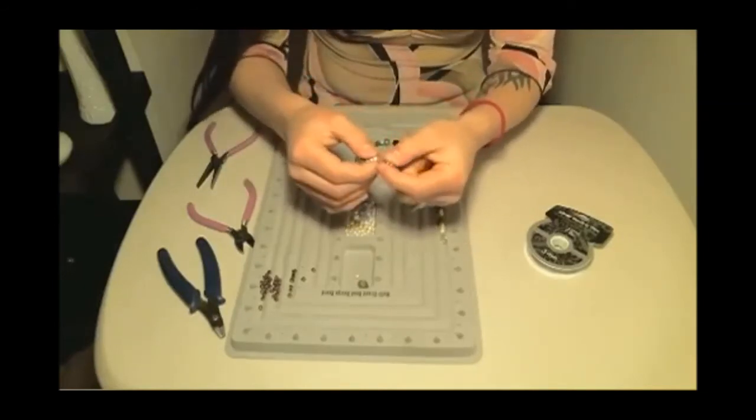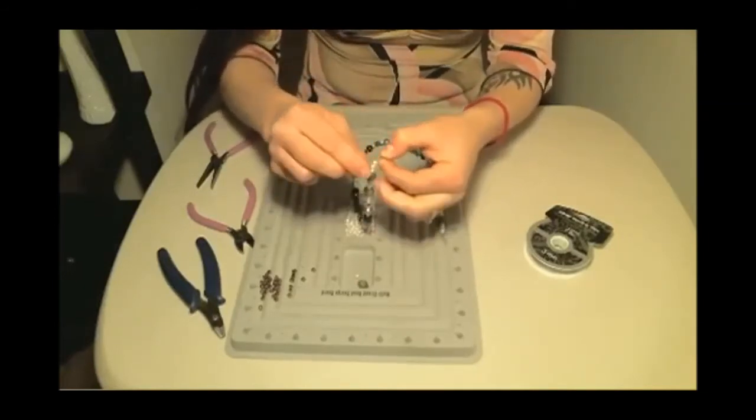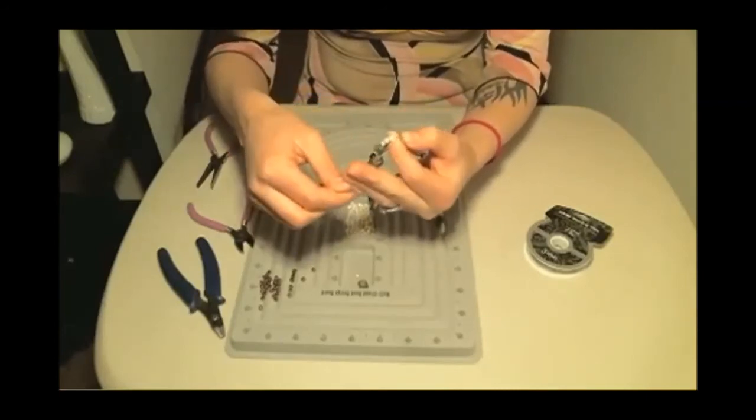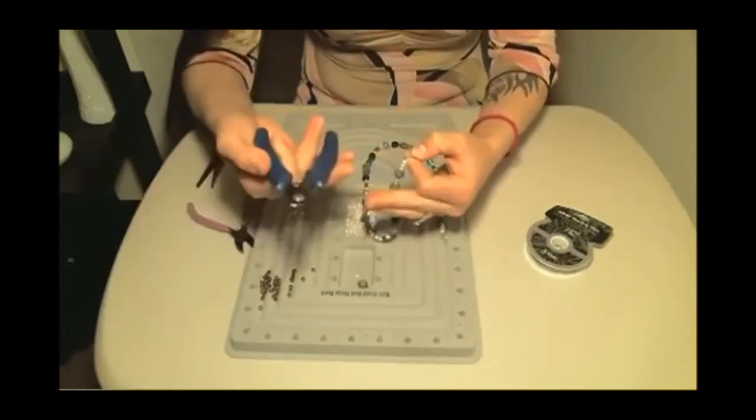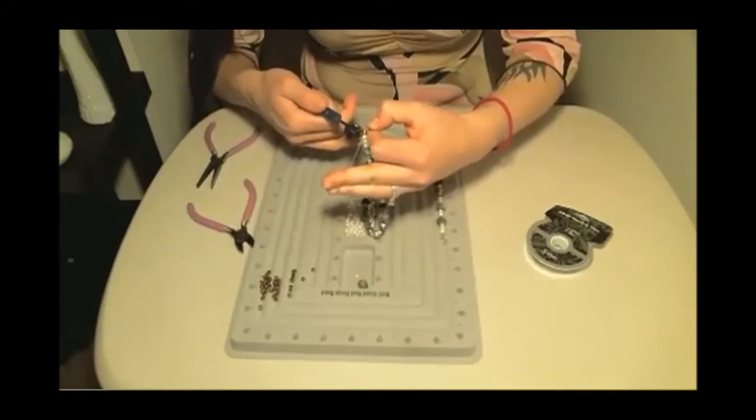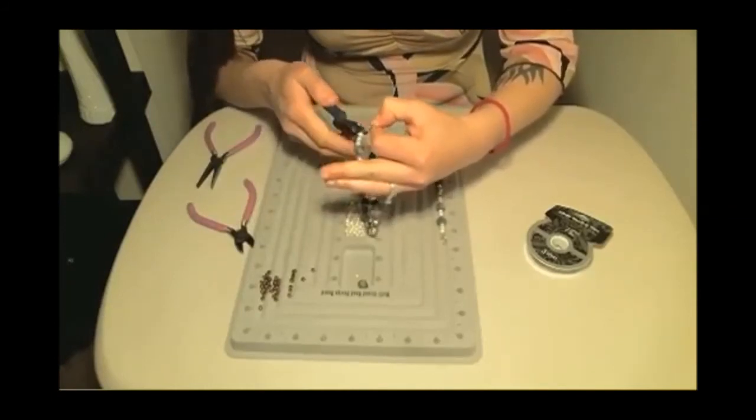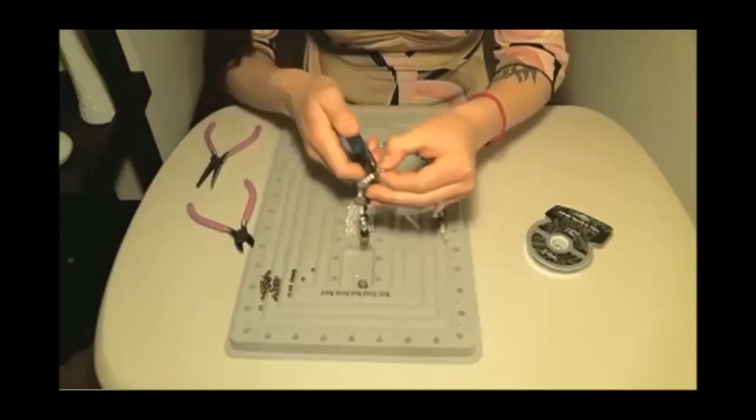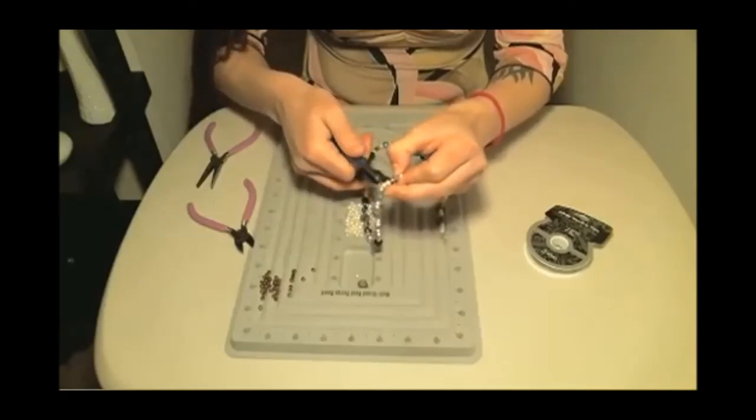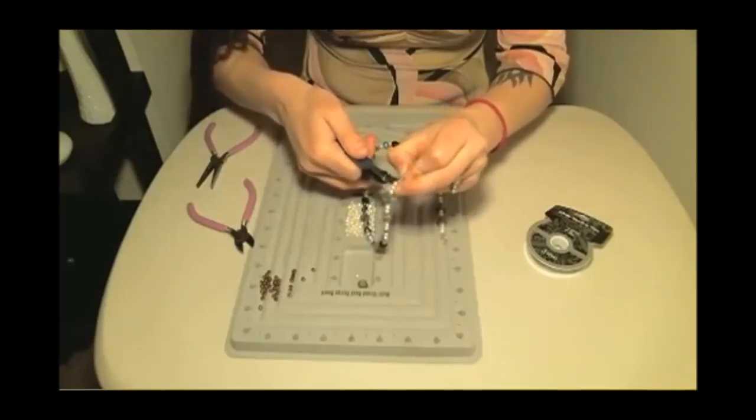So what I do is I hold my lobster clasp and then I hold my wire with my fingers. And I'm just going to take my crimp tool and just crimp it the same way that I did with the other one. And then after you crimp it, you're going to, well after you crush it the first time, you're just going to fold it.